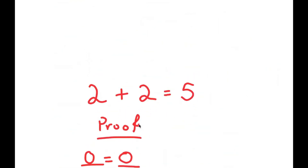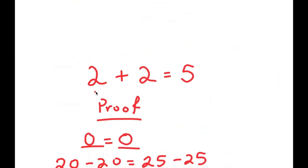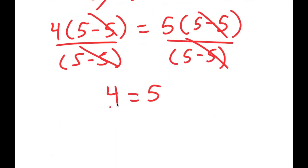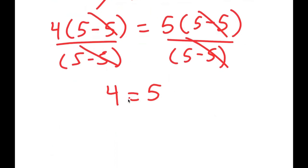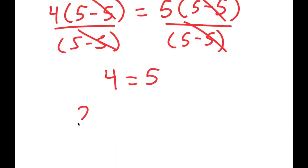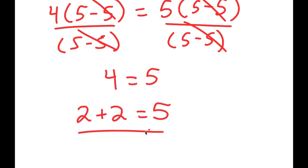Going back to our original equation, I said I was going to prove that 2 plus 2 is equal to 5. Well, what is 4 equal to? 4 is equal to 2 plus 2. So I get 2 plus 2 is equal to 5. So I just proved that 2 plus 2 is equal to 5.